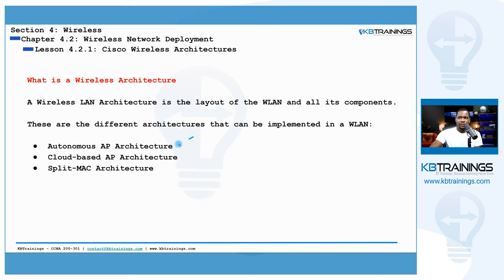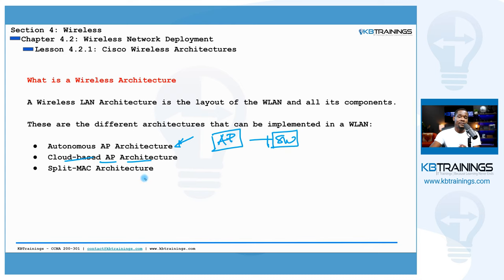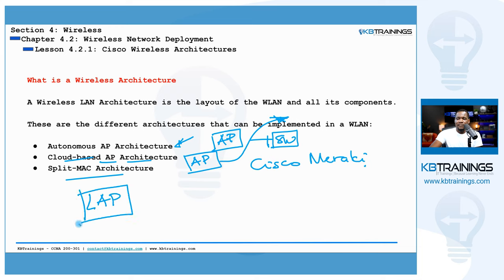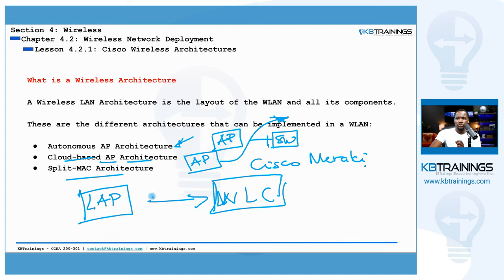The first architecture is the autonomous AP architecture, where APs are standalone. They don't depend on any other device — they only rely on themselves and are connected to your switch or wired network. The second is the cloud-based AP architecture, where APs rely on cloud resources to run — Cisco Meraki is a good example. The third is the split-MAC architecture, where some wireless functions reside on the lightweight access point and others are provided by the WLC, the wireless LAN controller.